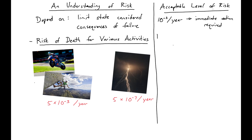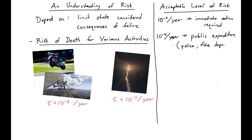If we're at 10 to the negative fourth per year, or 1 in 10,000 people, then this would be something that the public would expect some expenditures for — so we'll say public expenditure. This means they would expect maybe an increase in police or a fire department to take care of this risk.